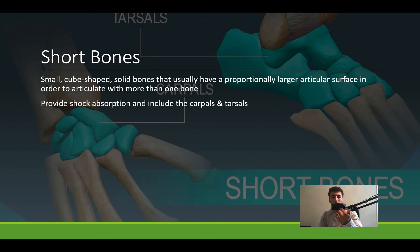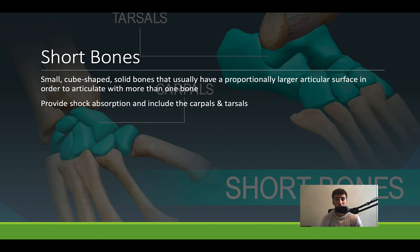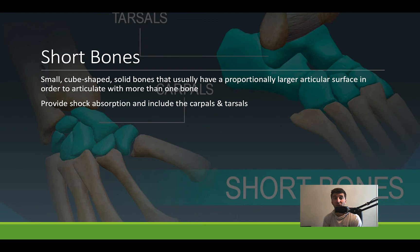Short bones: name follows form. They are literally small, cube-shaped, solid bones with large articular surfaces. This allows movement across them — they can shift and move alongside other bones. Think of it like flagstone or pavers. They're there for shock absorption and providing structure, and because of how many surfaces they have, they can articulate and form to fit the surrounding surface.